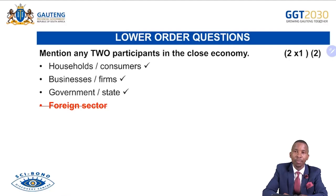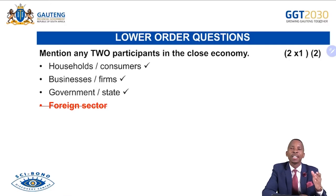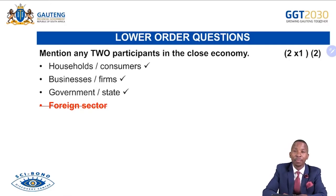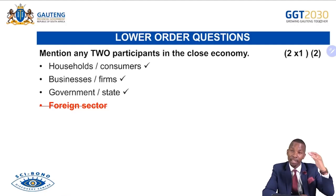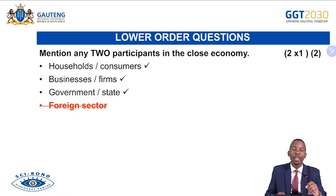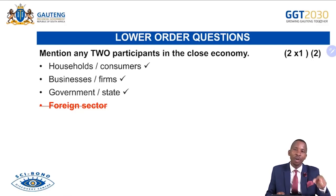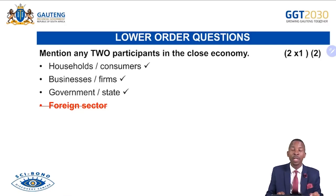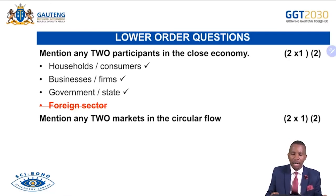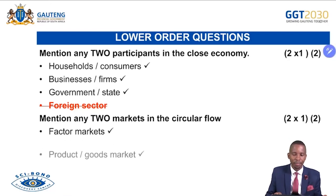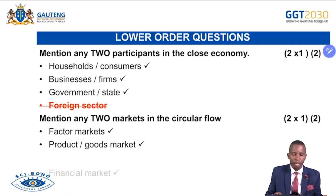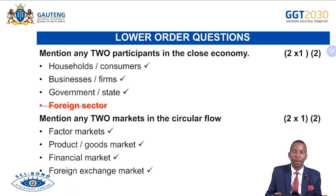Then we go to higher order: 'How can household contribute to building the South African economy?' — now you must think. The same content can be assessed at lower, middle, and higher order. Continuing lower order examples: factor market, product market, financial market, and foreign exchange market. 'Mention any two leakages in the circular flow': taxation, savings, and payment for imports.